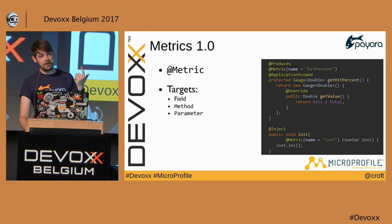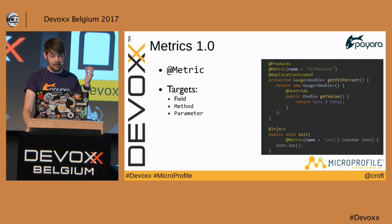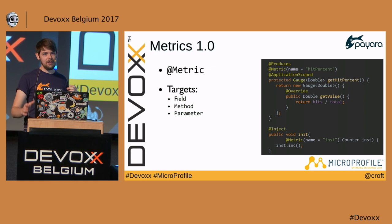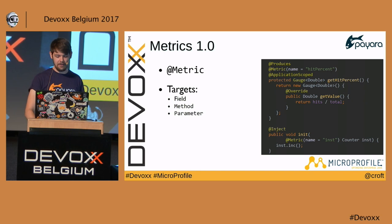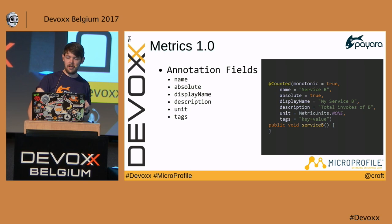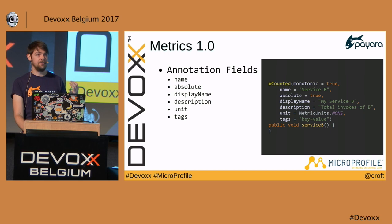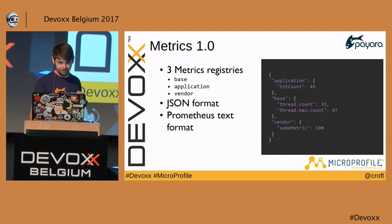@Metric can be added on a field, method, or parameter. When annotating a @Gauge with @Metric, you override the getValue() method of Gauge and return whatever you want — giving you more flexibility. All metrics have fields: name, absolute, displayName (picked up by Prometheus or Grafana), description (shown in browser views), unit, and tags for supplying extra data. @Counted additionally has the monotonic property.